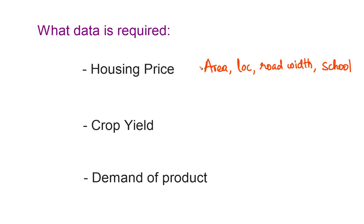You need to provide such information to the machine learning algorithm as well, in order for it to learn the relationship between the inputs you provide and the output you expect. As a data scientist, you will need to — sometimes working with experts — figure out what sort of data will be helpful in predicting the quantity of interest.